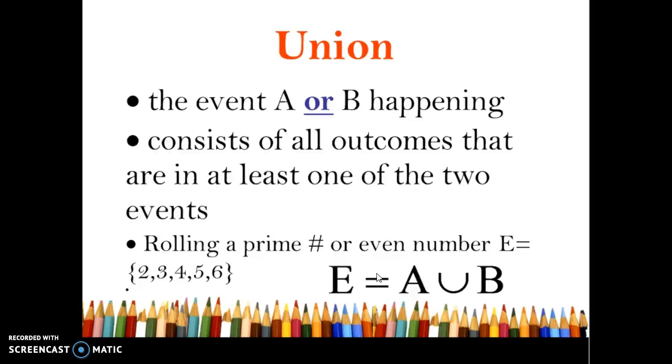A union is A or B happening. So you're not being very picky, it's as long as either or happens. It consists of all the outcomes that are at least in one of the two events. So rolling a prime number or an even number. Our primes were 2, 3, and 5 and our evens were 2, 4, and 6.